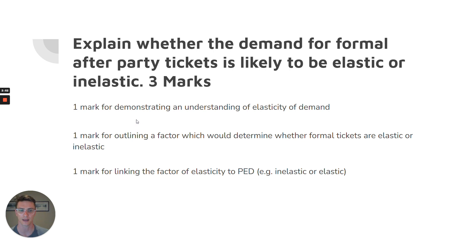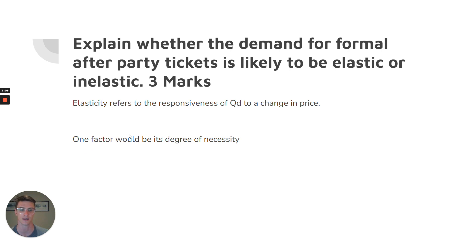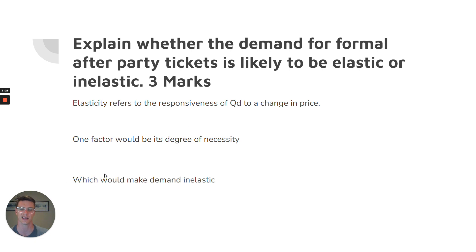Let's have a look at a sample answer. First, define elasticity — it's the responsiveness of quantity demanded to a change in price. My factor is the degree of necessity. You can state here one factor is the percentage of income that formal after-party tickets make up, or the availability of substitutes for formal after-party tickets. You're going to state the factor, then link that back to whether it determines elastic or inelastic demand.